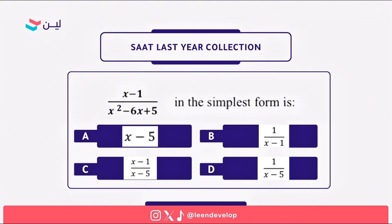The next question requires simplifying the given algebraic expression. The first step is to factor the denominator, which is a quadratic expression. We find two numbers that multiply to 5 and sum to minus 6 — those two numbers are minus 5 and minus 1. Thus the fraction becomes (X minus 1) divided by (X minus 5)(X minus 1).